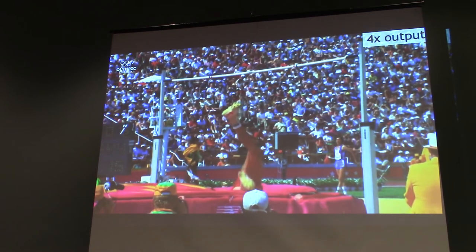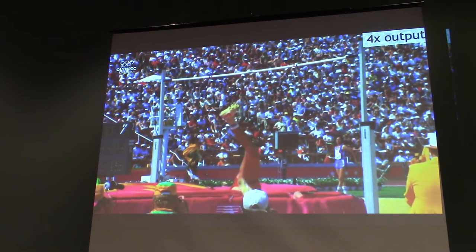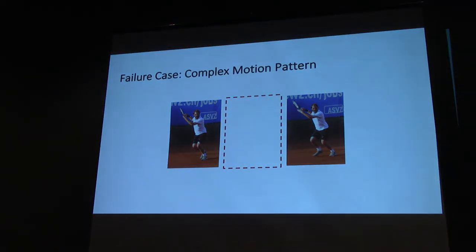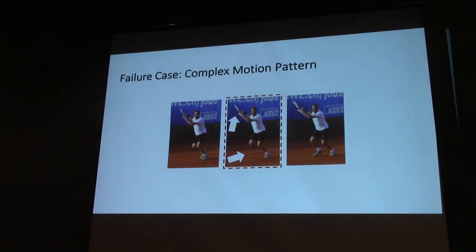Super Slow Mo works well in most cases, while in some cases it also struggles. Can anyone guess where Super Slow Mo may fail in this example? Yeah, I've heard that. Exactly. The ball - that is a very challenging part. Why? Because the ball is only partially visible in one of the input images, so it's very hard for the network to find correspondences in input images and then warp the input image.